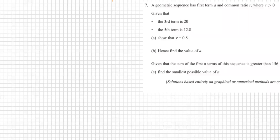Right, question 7. A geometric series has first term a and common ratio r, where r is larger than 0. The following information is given: the third term is 20, the fifth term is 12.8. Part a: Show that r equals 0.8.